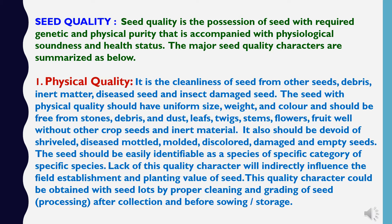The first seed quality character is physical quality. It is the cleanness of seed from other seeds, debris, inert matter, diseased seed, and insect-damaged seed. The seed with physical quality should have uniform size, weight, and color, and should be free from stones, debris, dust, leaves, twigs, stems, flowers, fruits, other crop seeds, and inert material. It should also be devoid of shriveled, diseased, molded, discolored, damaged, or empty seeds. Seeds should be easily identifiable as a species of a specific category. Lack of this quality character will indirectly influence field establishment and planting value. This quality character can be obtained by proper cleaning and grading of the seed lot through processing after collection and before sowing and storage.